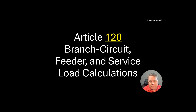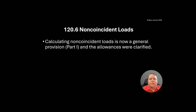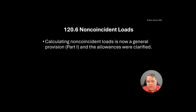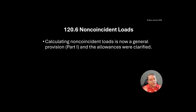Article 120, branch circuit feeder and service load calculations — 120.6. Calculating non-coincident loads is now a general provision and the allowances were clarified. So really two things happened here.